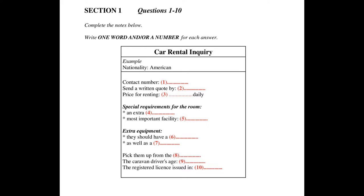You will see that there is an example which has been done for you. On this occasion only, the conversation relating to this will be played first. Hello, First Choice Car Rental, how may I help you? Oh, good morning. I'm calling for some information about your car renting services. I'm an American and I will be going on a family holiday to your city from Ohio next month. The woman says that she is an American, so American has been written in the space. Now we shall begin. You should answer the questions as you listen because you will not hear the recording a second time. Listen carefully and answer questions 1 to 5.